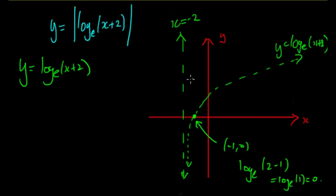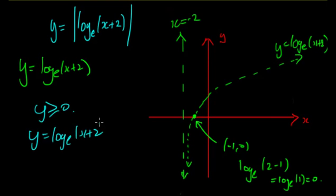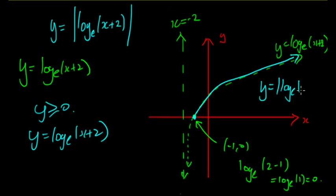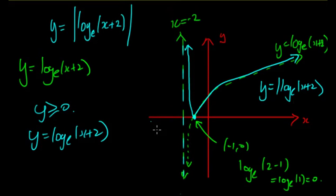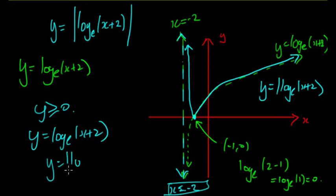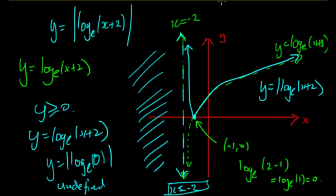Now applying the modulus: when y ≥ 0, it stays the same — y = log_e(x + 2). So that portion of the graph is unchanged. Where y is negative, the modulus flips it positive, so that section reflects upward. The asymptote at x = −2 stays the same. Why can't x = −2? Because log_e(0) doesn't exist, and taking the modulus of undefined is still undefined. So for x ≤ −2 there is no graph.